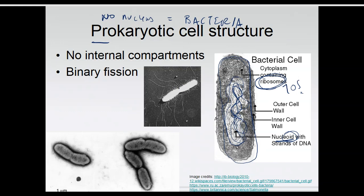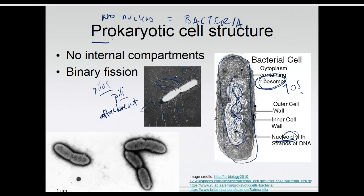Another cool structure that bacteria cells have are these stringy things. In a eukaryotic cell we would call these flagella, but because it's a prokaryote they are instead called pili — pilus is one, pili is many. The bacteria use them for attachment: they might help attach to a surface, but they also help attach to other bacteria to trade little pieces of DNA. This improves their genetic variation, but it's really bad for us because this is how bacteria can share antibiotic resistance.